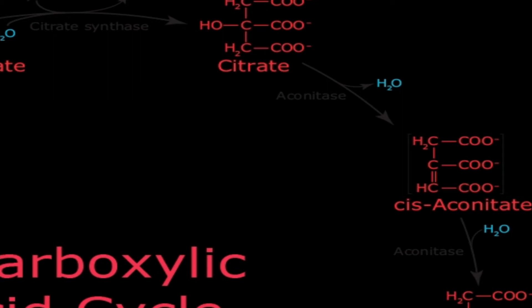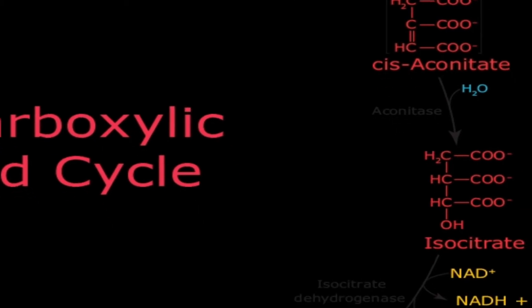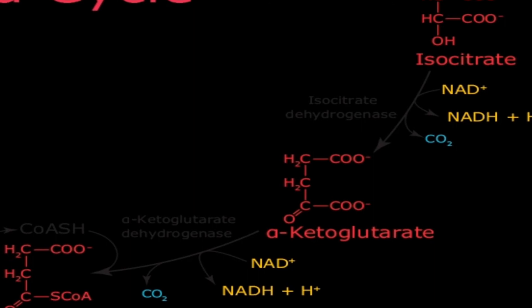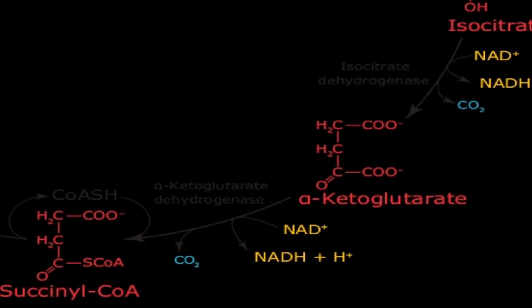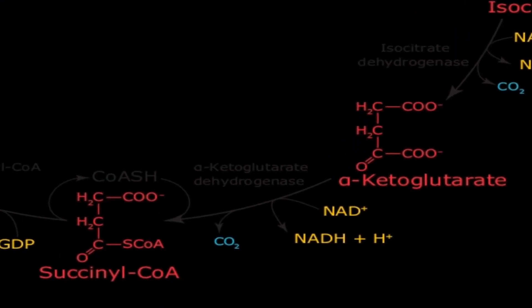This is an important step: citrate is converted to isocitrate. In the next step, this isocitrate is oxidized into alpha-ketoglutarate by the enzyme isocitrate dehydrogenase. The isocitrate undergoes decarboxylation and is oxidized into alpha-ketoglutarate, which you are able to see here on the screen.